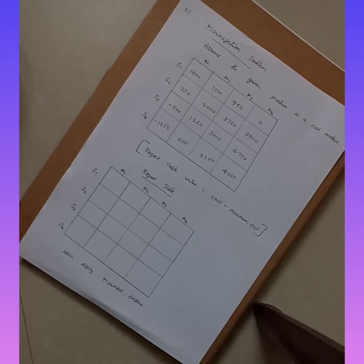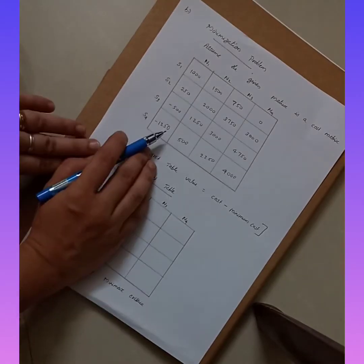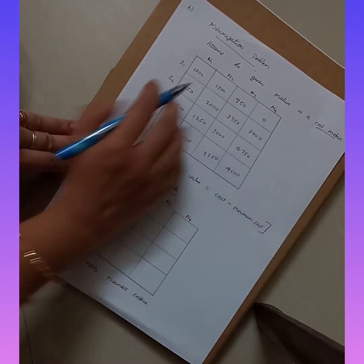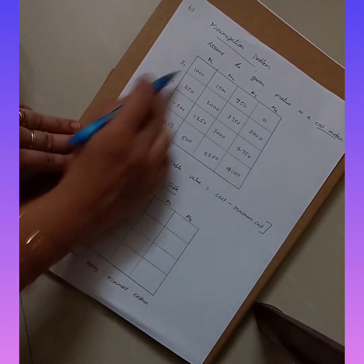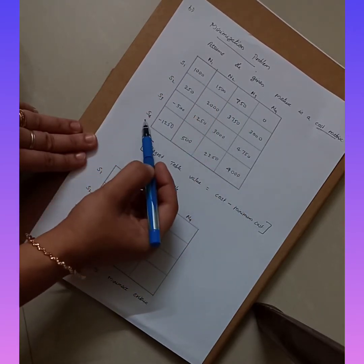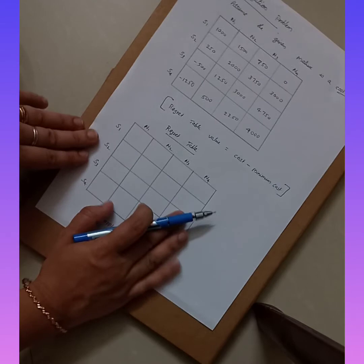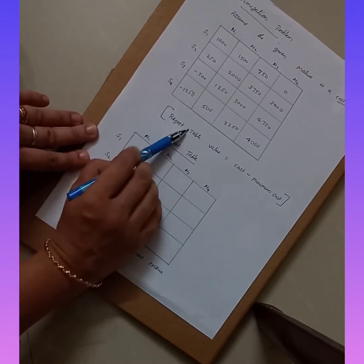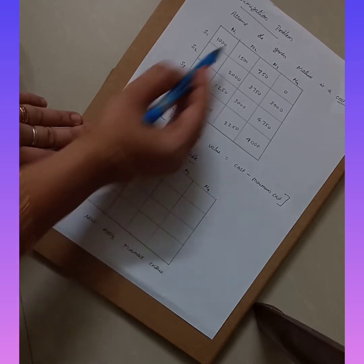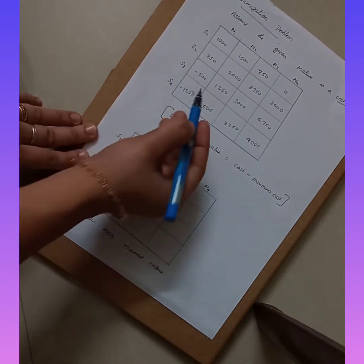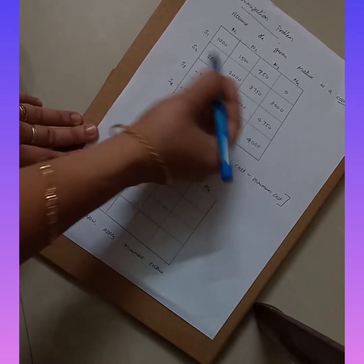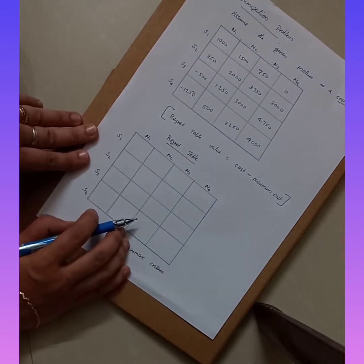Now consider the minimization problem. Whenever a cost matrix is given, it is a minimization problem. Here the formula for constructing the regret table is: regret table value = cost minus minimum cost. For each column, find the minimum value and subtract it from each and every cost in that column.